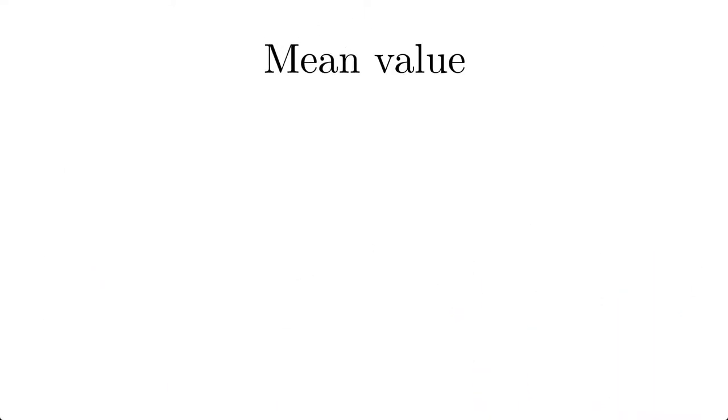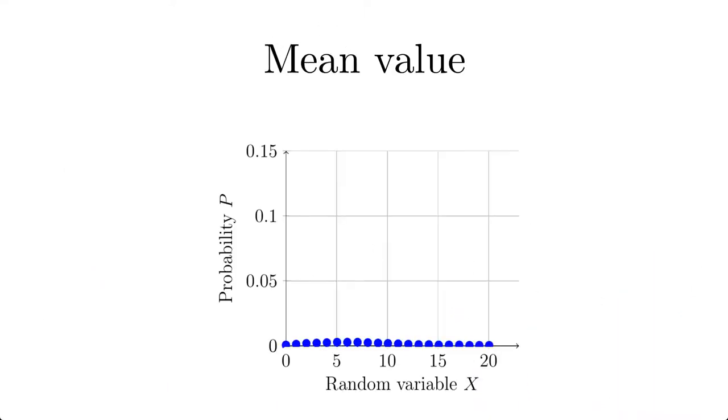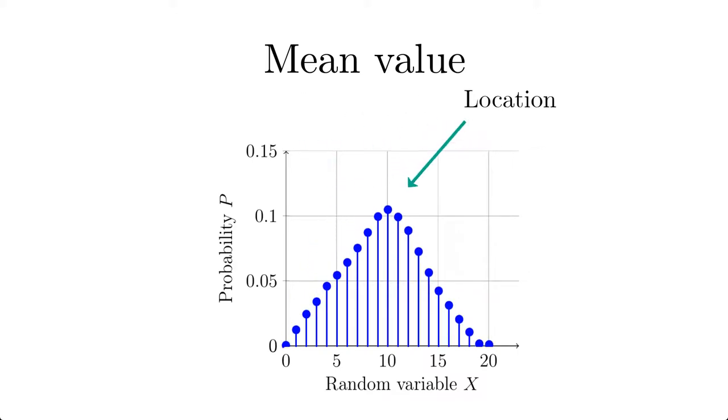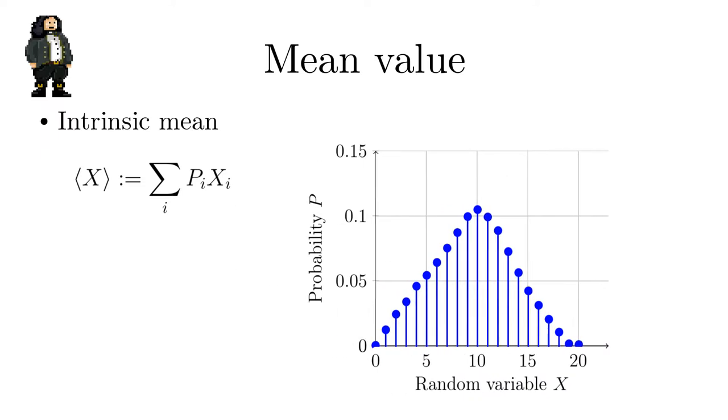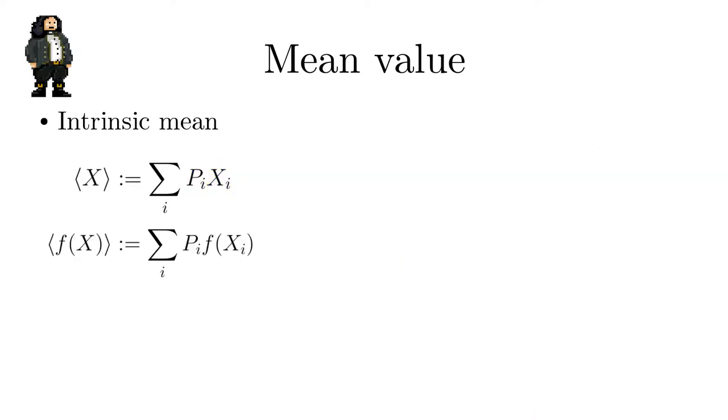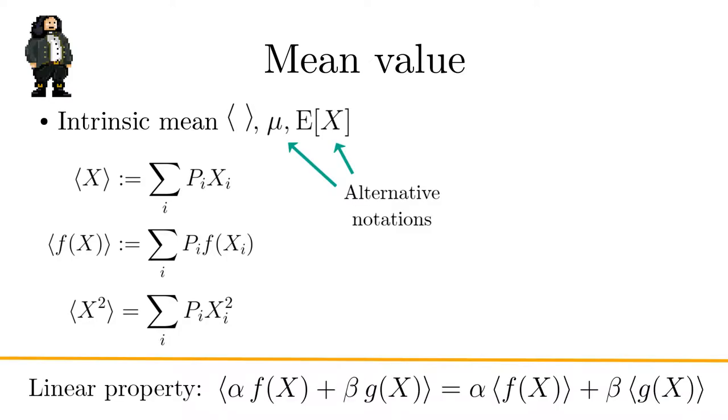The mean value, also called expectation value, describes the location of a distribution. Based on the intrinsic probabilities, the intrinsic mean is a fixed number given by the weighted sum of the random variable using the probabilities as weights. One can also calculate the mean of functions of random variables, like x squared. We denote the intrinsic mean by angle brackets. Note that the mean is linear. We will study this property in some minutes.